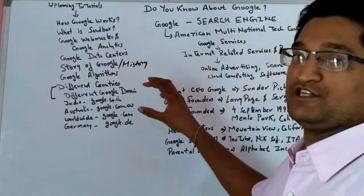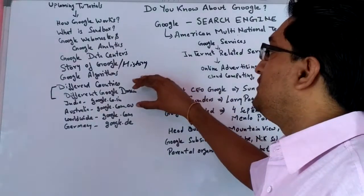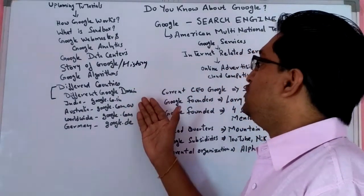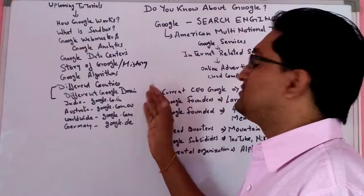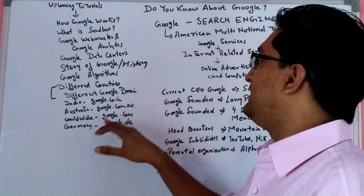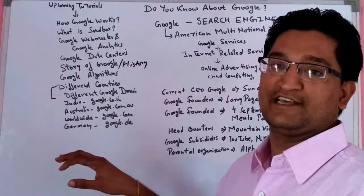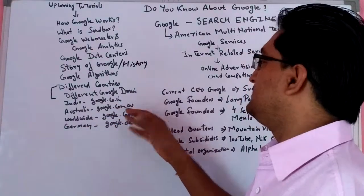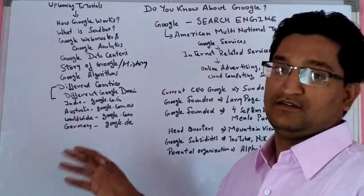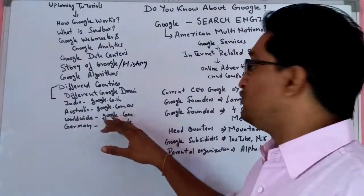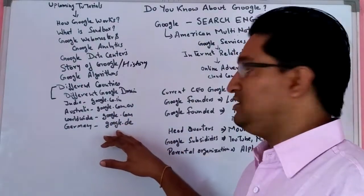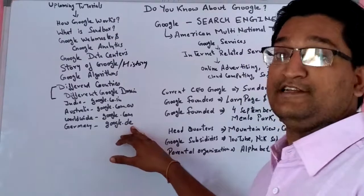One of the most important questions is: if you are in India, then you can search Google with the domain Google.com.in. And if you are in Australia, then you can search results on Google.com.au. And while you are searching, you can use Google.com. And if you are in Germany, then you can use Google.de.